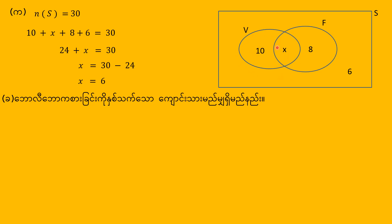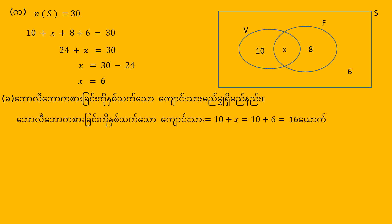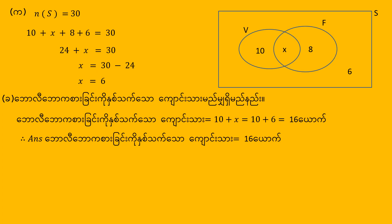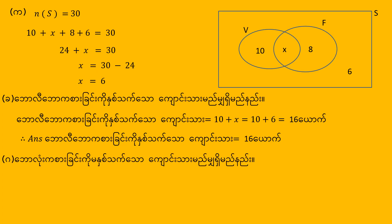Here you go and see how it works. If you have 10 plus X, you can see that 10 plus X is 60, 60, 60, 60. If you have 10 plus X, you can see that 10 plus X is 60, 60, 60, 60. If you have 10 plus X, you can see that 10 plus X is 60, 60, 60, 60, 60.